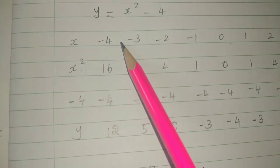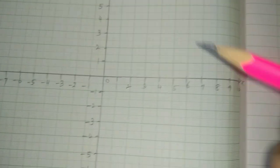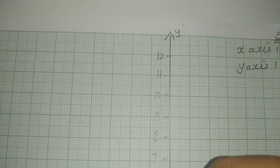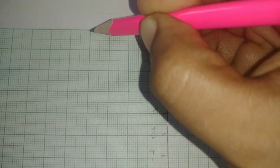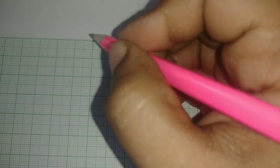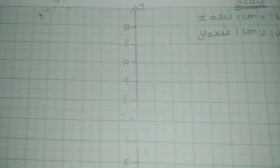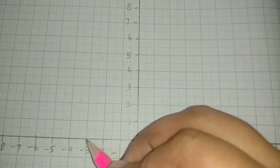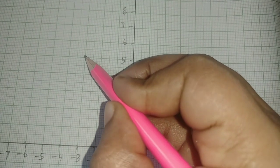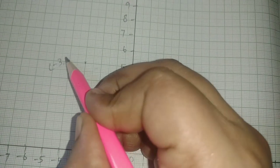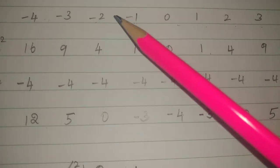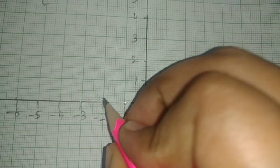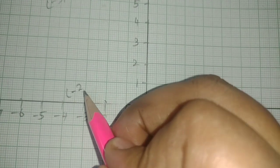So minus 4, 12 — x-axis minus 4 is here, 12 is here, top is here. Plot minus 4, 12. Next, minus 3, 5 — minus 3 is here, 5 is here, plot minus 3, 5. Next, minus 2, 0 — minus 2, 0 is on the axis. Plot minus 2, 0.